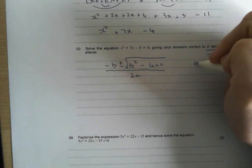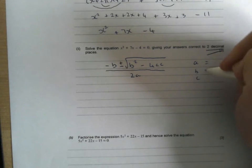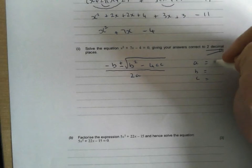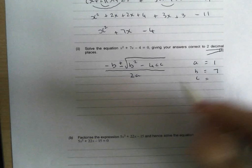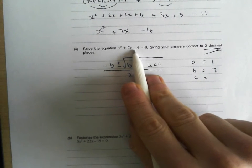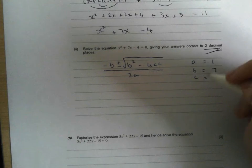And then write down what your values of A, B, and C are. So A is your number of x squareds, in this case 1x squared. B is your number of x's, in this case positive 7x's. C is your number at the end, and it's not 4, it's minus 4. Be careful with that.